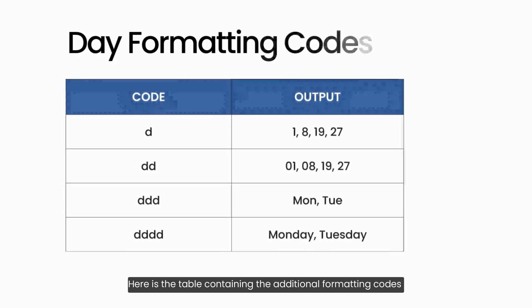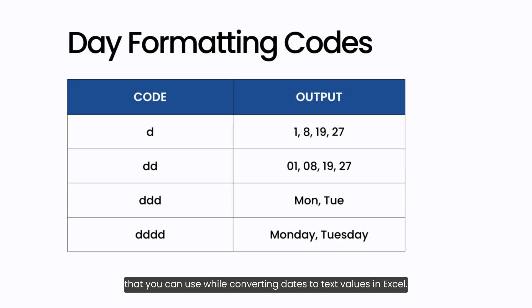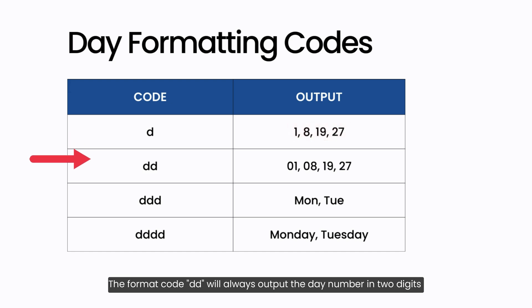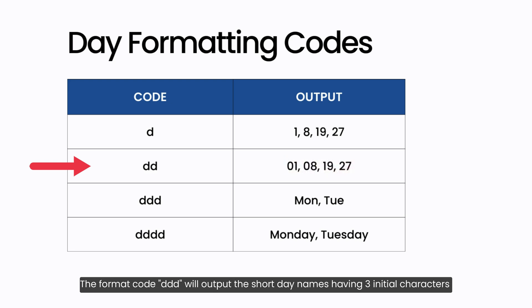Here is a table containing the additional formatting codes you can use while converting dates to text values in Excel. Starting with the day part: you can use the single letter d to get the day number without a leading zero. The format code dd will always output the day number in two digits with a leading zero for day numbers less than 10. The format code ddd will output the short day names with three initial characters, like Mon, Tue, etc.